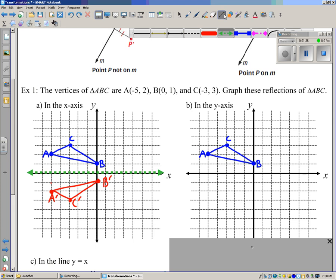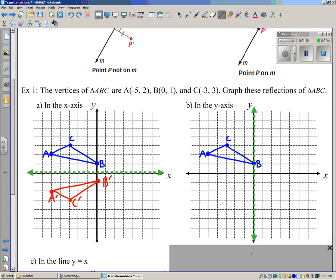Let's reflect over the y-axis. Same triangle, different line of reflection. Same method, though. One, two, three, four, five units away. A is five units away. So we're going to count one, two, three, four, five units to end up at A prime.